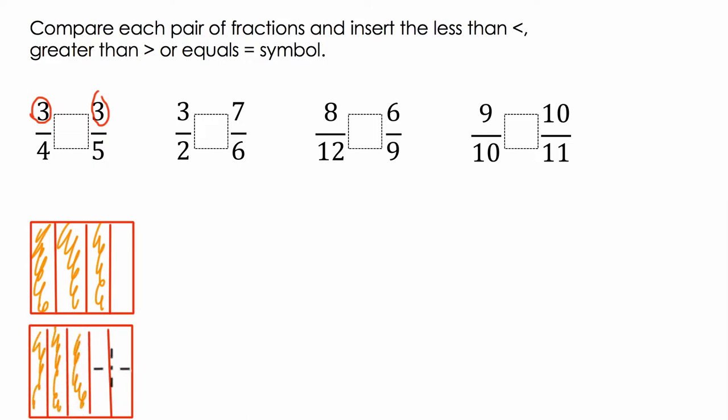And you don't have to draw a picture every time. You could just think, well, the more pieces I cut up a shape into, if all the pieces are equal, the more pieces I cut it into, the smaller each piece. So if I had three-sixths, that would be even less. Three-sevenths, that would be even smaller. The more pieces you cut up, the smaller it gets. So three-fourths must be bigger than three-fifths.